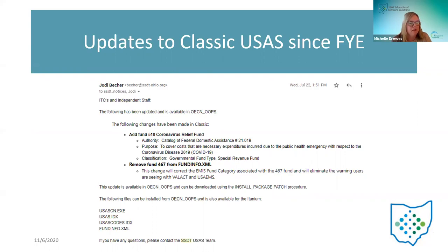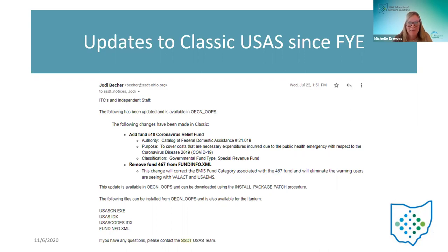Just a couple other things — updates made in classic since fiscal year-end. We don't get much in the way of classic updates anymore; we're basically fixing things or adding things because the state's office has a new fund. Back in July, we sent out a message regarding the 510 coronavirus relief fund. Lots of funds were added this year because of COVID — 507, 508, 509 were added before fiscal year-end, and then 510 was added after fiscal year-end.